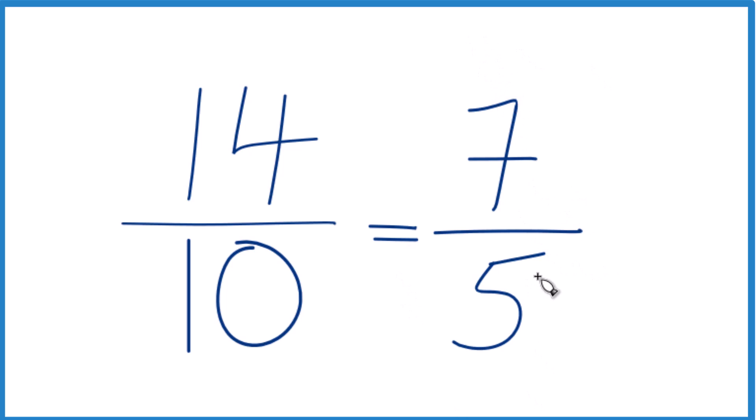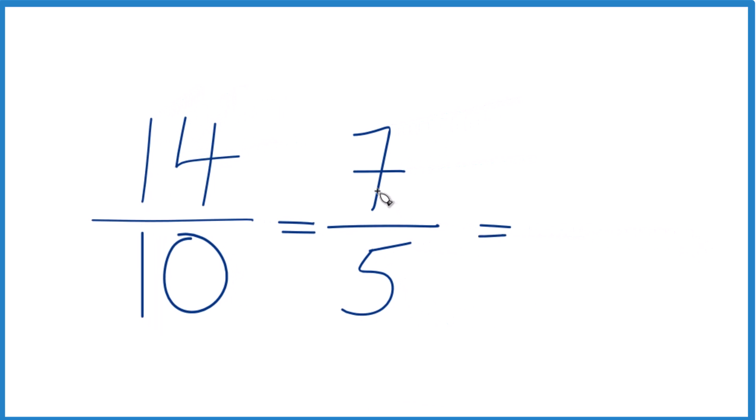7/5, that's simplified. To write this as a mixed number, we could take and see how many times 5 goes into 7. 5 goes into 7 one time with 2 left over, so 2 is our remainder, that becomes the numerator.